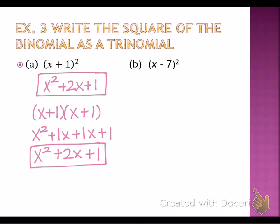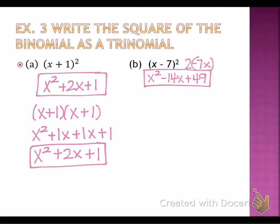Let's do letter B. First part of the shortcut: square the first term, which gives x squared. Second part: multiply the two terms together — x times negative 7 gives negative 7x — then double it to get negative 14x. Last step: square the second term, and negative 7 squared gives positive 49. Remember, the second sign will always be positive. Final answer: x squared minus 14x plus 49.